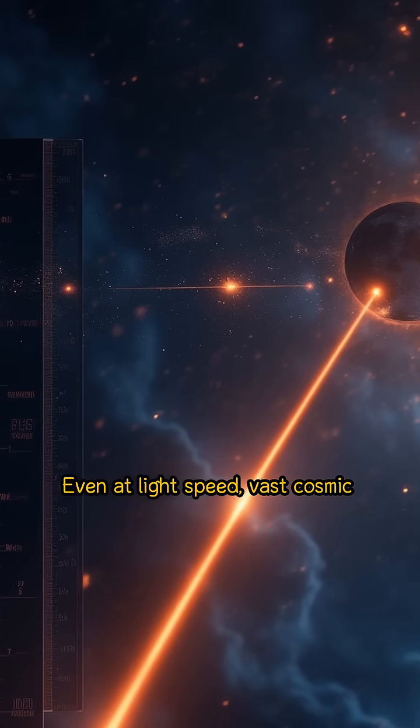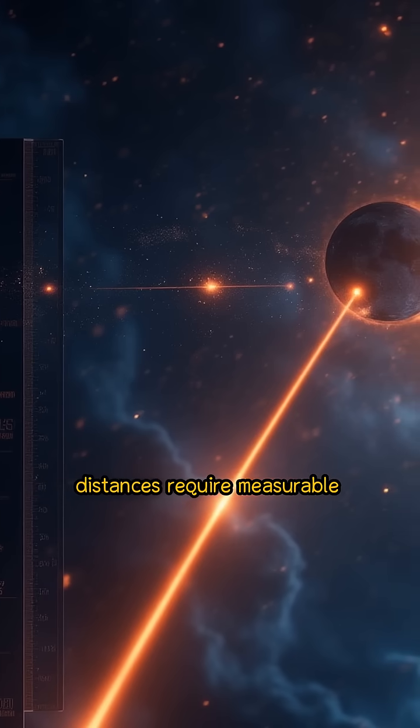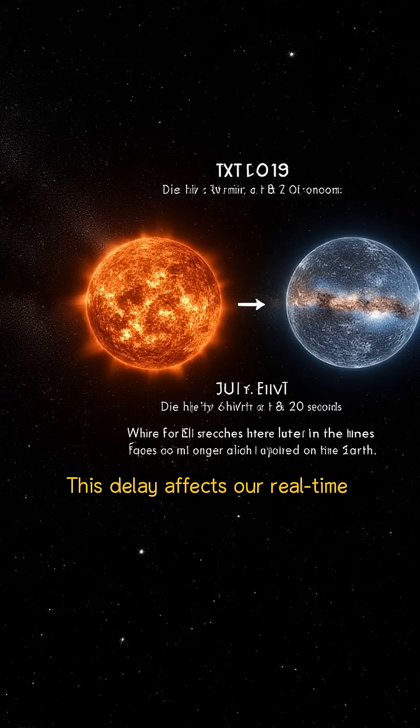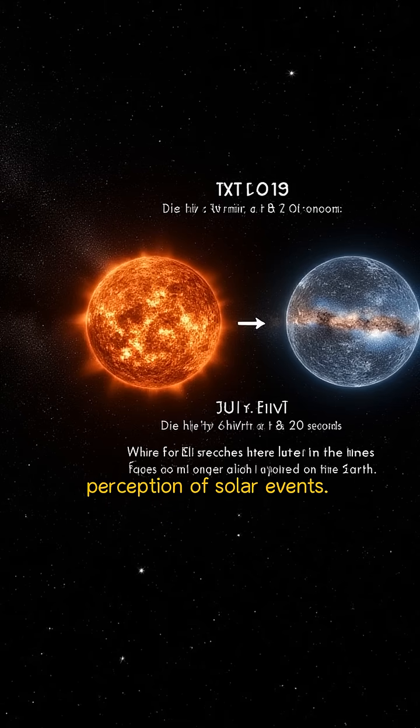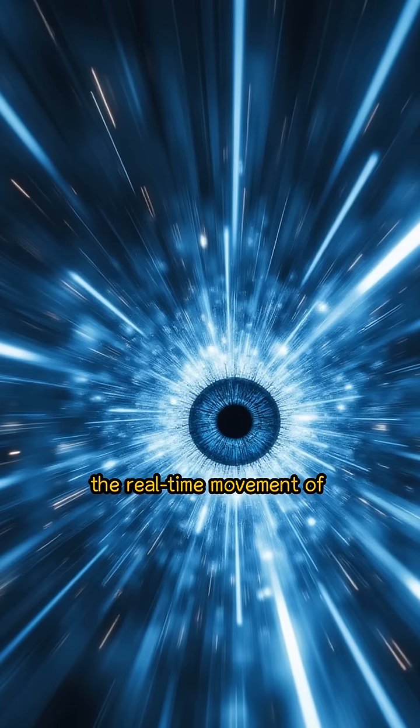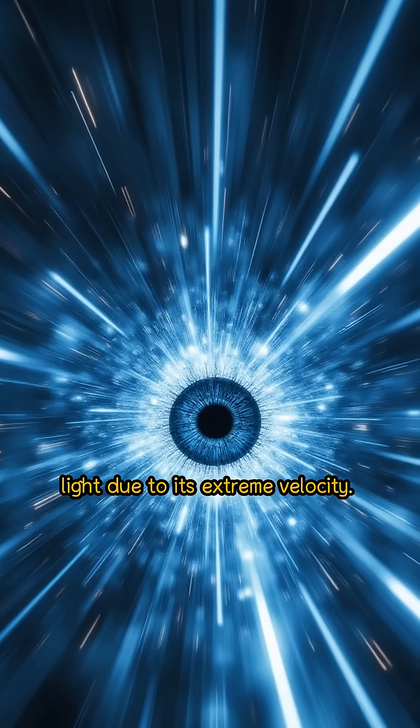Even at light speed, vast cosmic distances require measurable time. This delay affects our real-time perception of solar events. The human eye cannot perceive the real-time movement of light due to its extreme velocity.